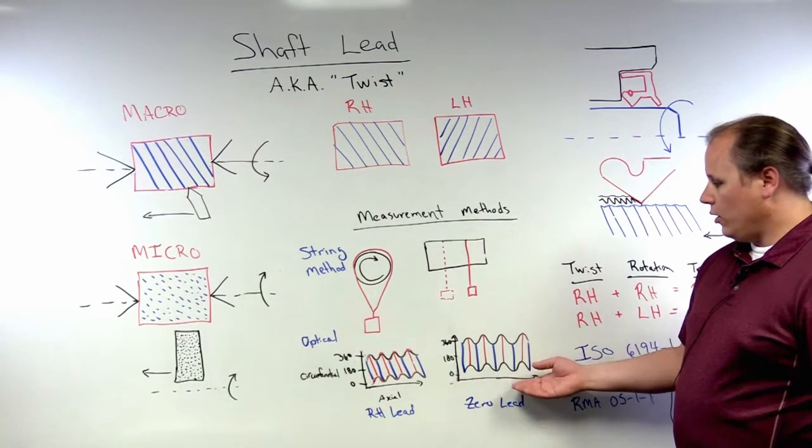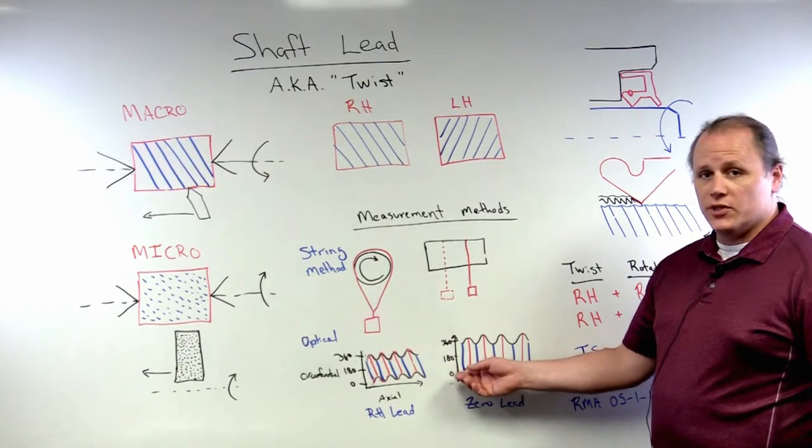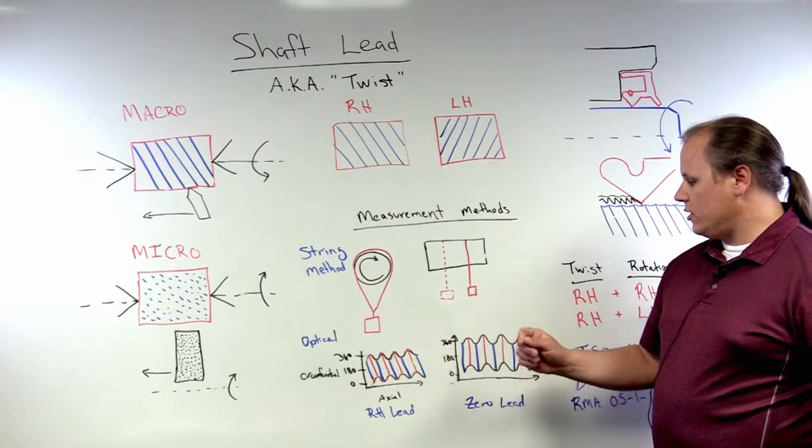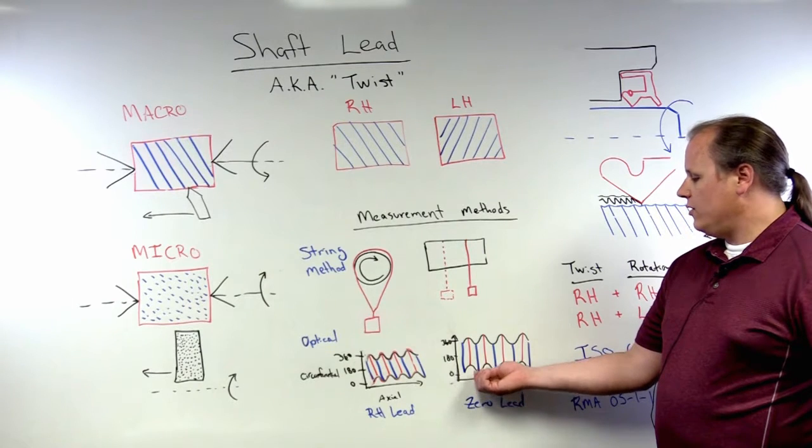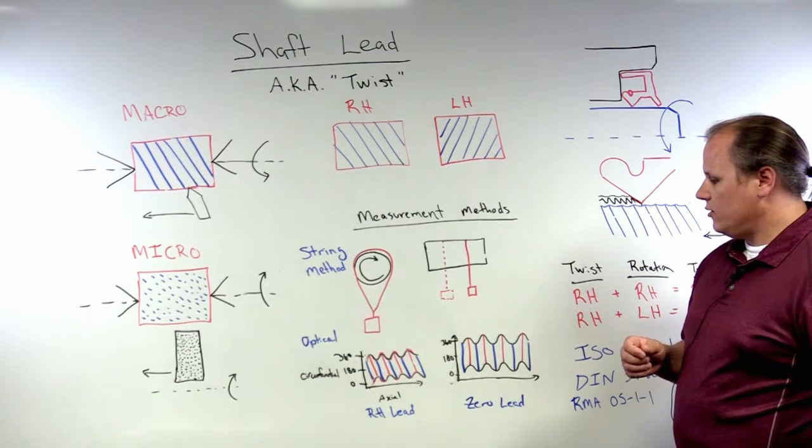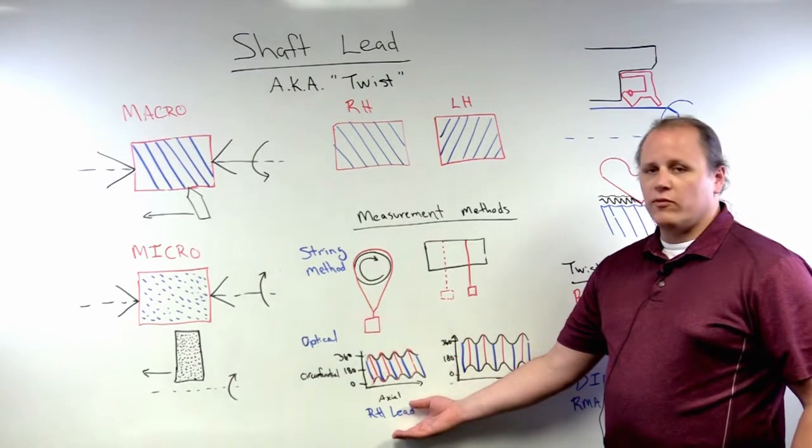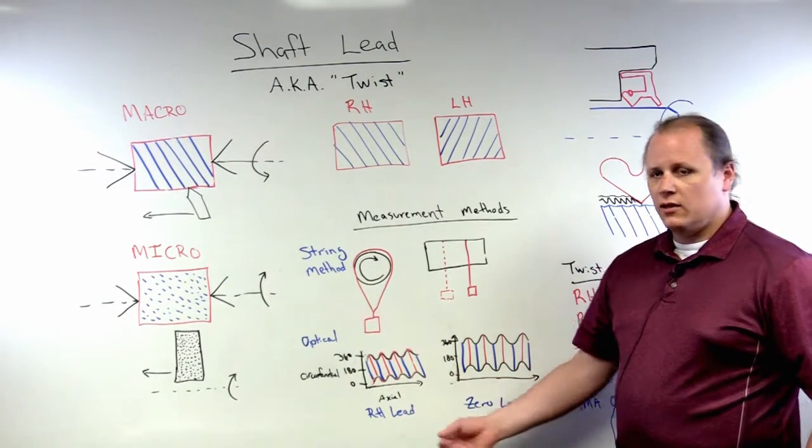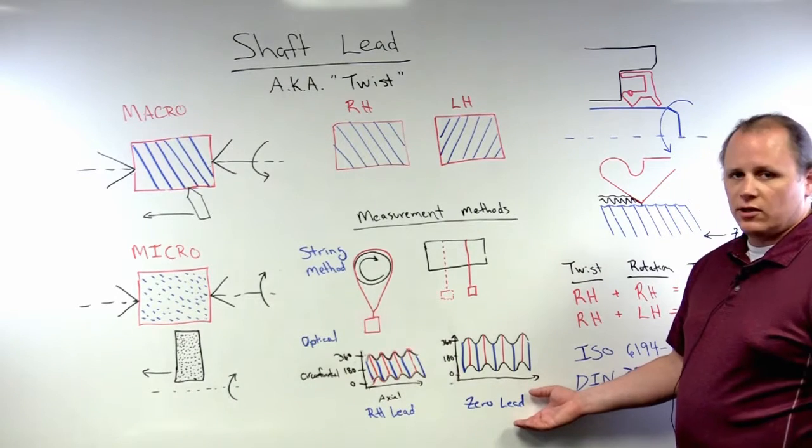In the one on the right-hand side, you can see as you move from 0 to 360 degrees, you actually have zero movement along the axial position of the shaft. This one we would refer to as having right-hand lead, this one having zero lead.